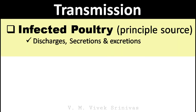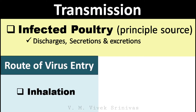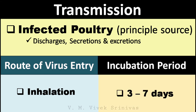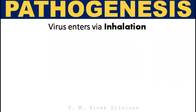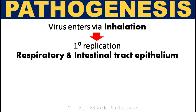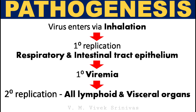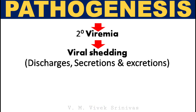Transmission. The discharges, secretions, and excretions from infected poultry act as the principal source of this virus. The portal of entry is through inhalation. The incubation period is on average 3 to 7 days from the entry of the virus, depending on the virus strain, bird species infected, and other host factors. Pathogenesis: following entry through inhalation, the virus undergoes initial replication in the epithelium of the respiratory tract and intestinal tract, followed by viremia. Next replication occurs at visceral and lymphoid organs, followed by secondary viremia with subsequent viral shedding through discharges, secretions, and excretions.